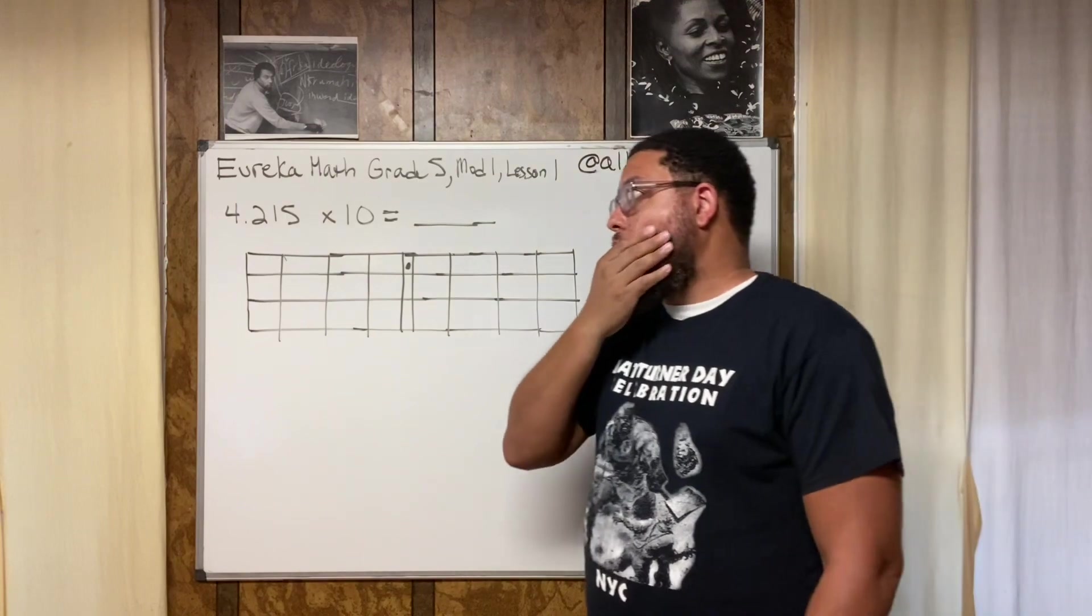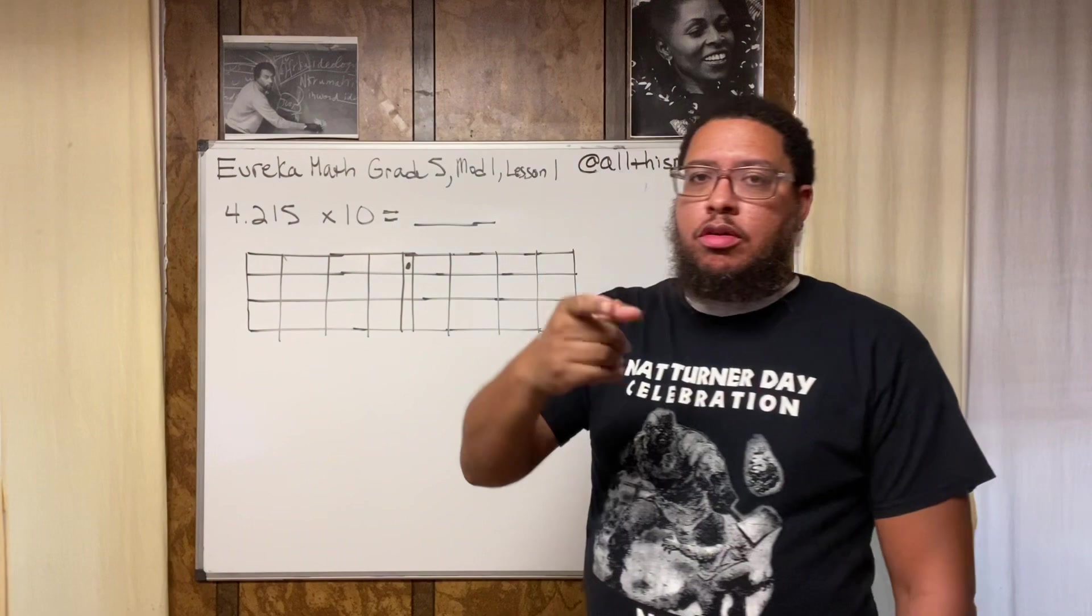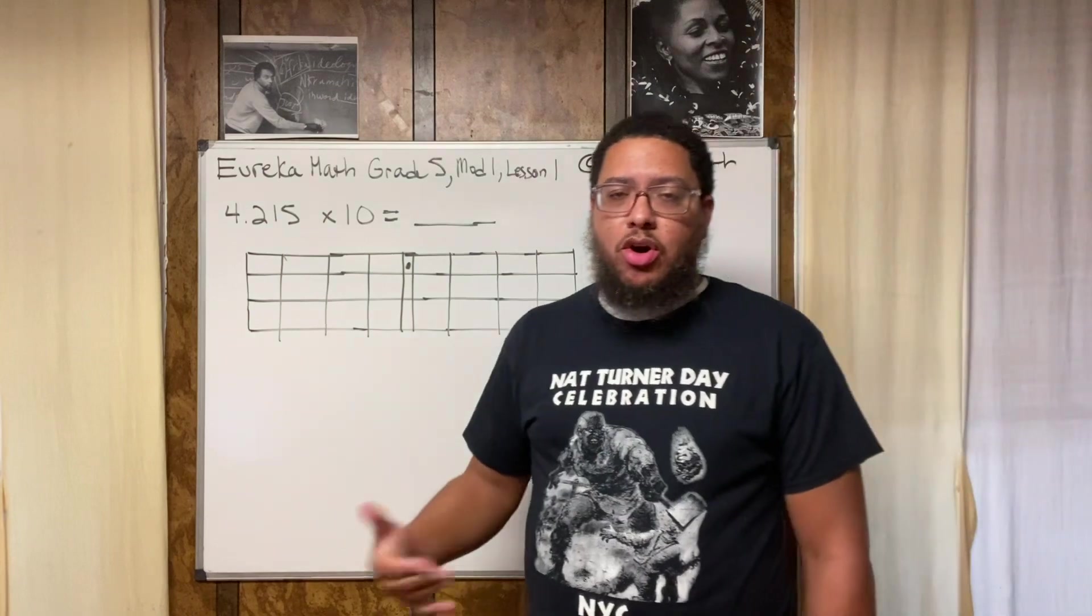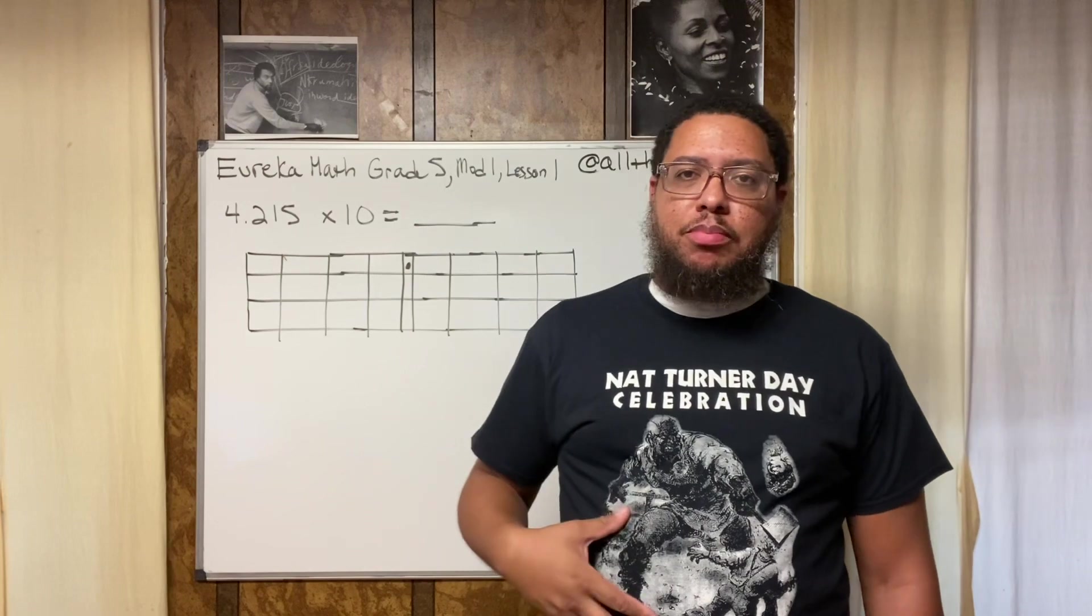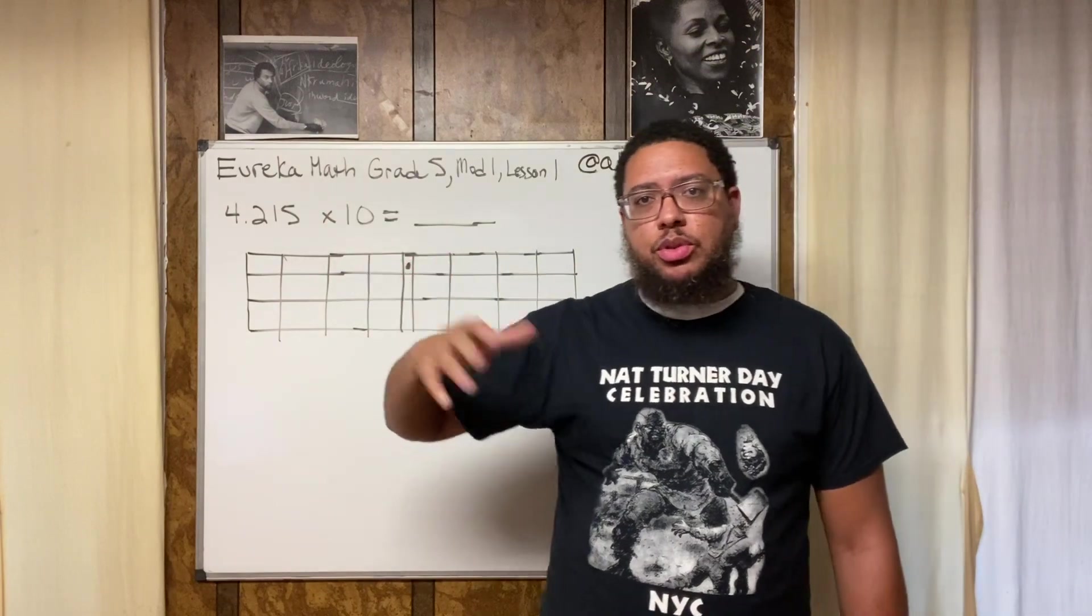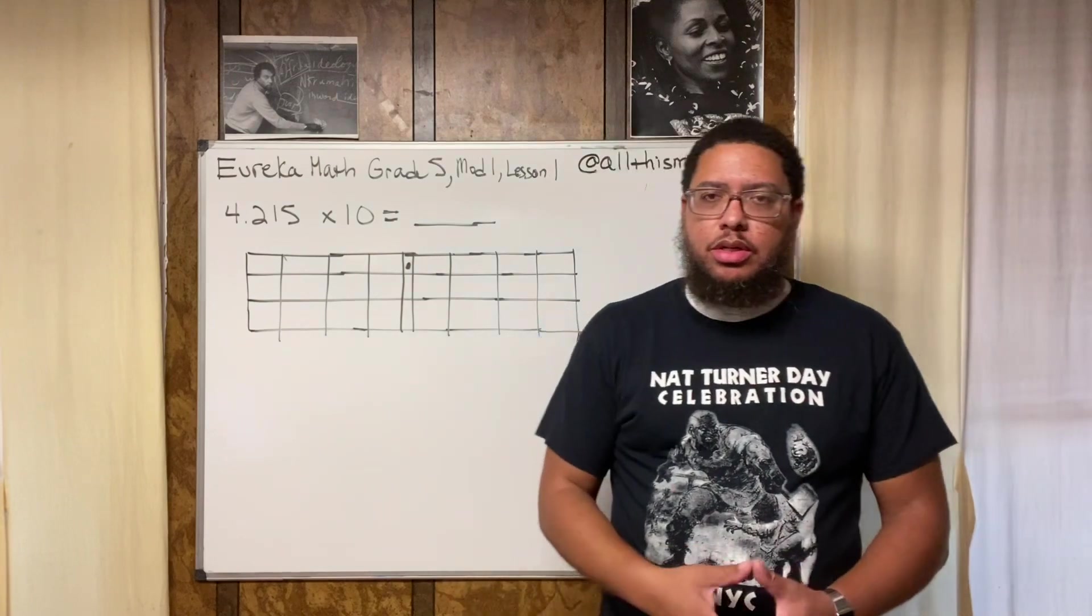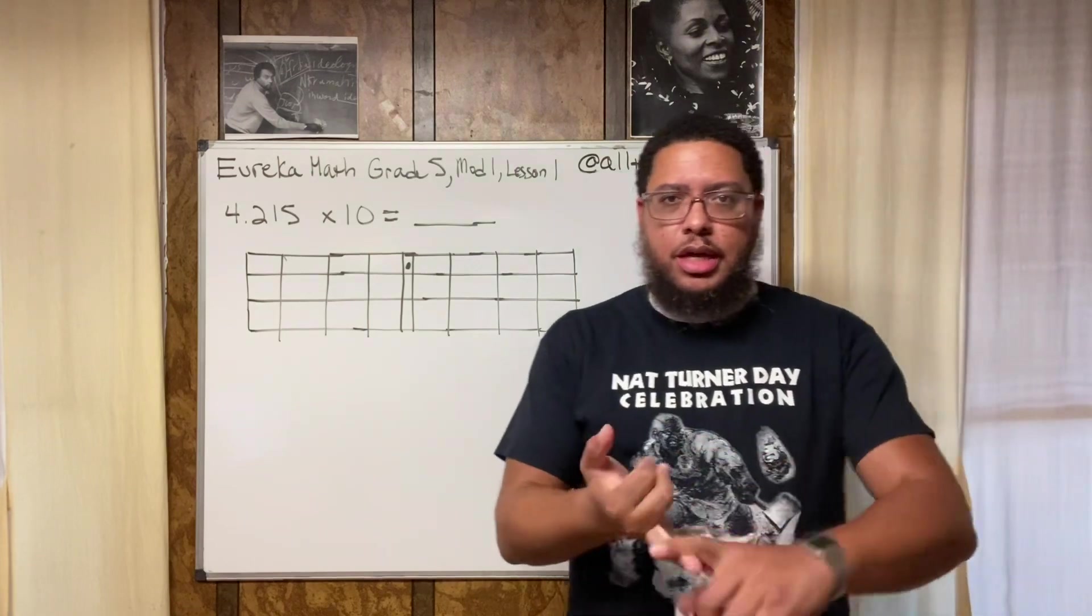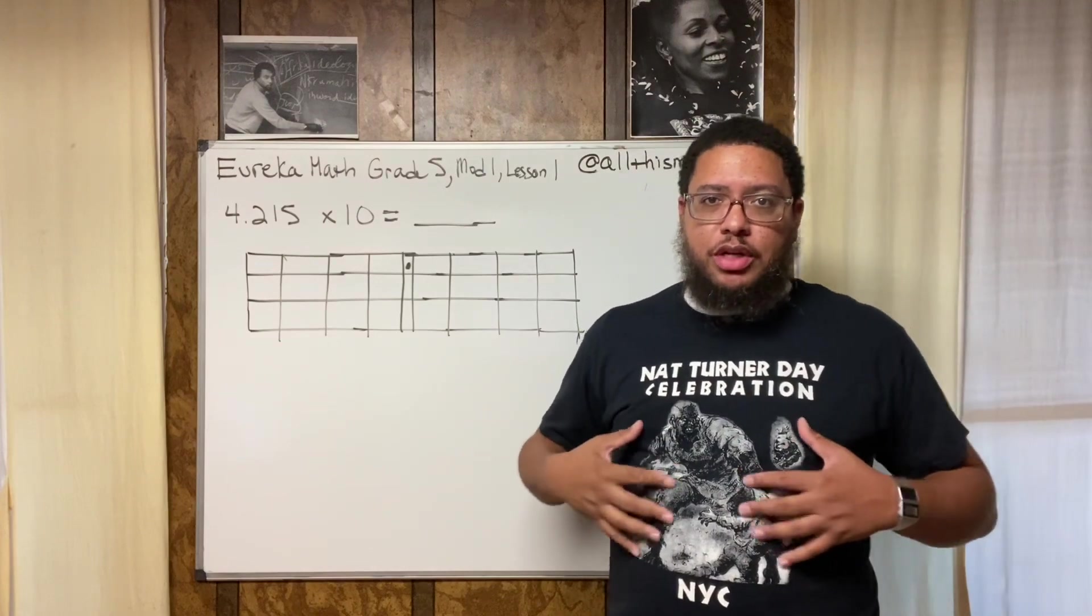This is from Module 1, Lesson 1. Before I even get into this, shout out to Nat Turner, to the ancestor Nat Turner. This is Black August. It's August while I record this video. Nat Turner's slave rebellion took place on August 21st, 1831, and actually many years later August 21st was when George Jackson, Black Panther Party member, was assassinated in prison in California. Those are two people you definitely should do your research on if you're not very familiar with them: Nat Turner and George Jackson. That's why I got this t-shirt on, because it's Black August right now as I record this video.